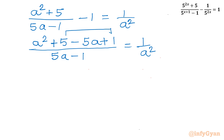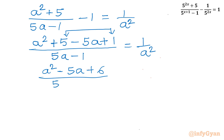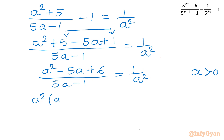Adding 5 and 1 gives 6. So we have a square minus 5a plus 6, divided by 5a minus 1, equal to 1 over a square. Now I can cross multiply. Since a is always greater than 0 because it is 5 power x, we get: a square times (a square minus 5a plus 6) equal to 5a minus 1.